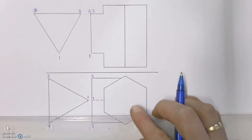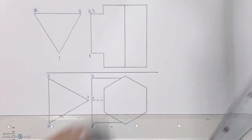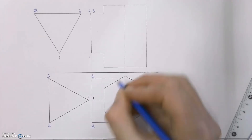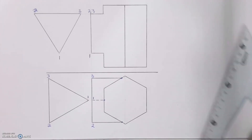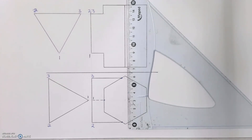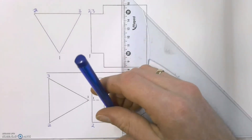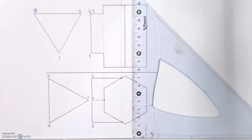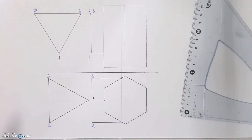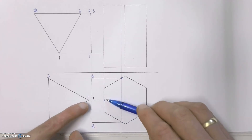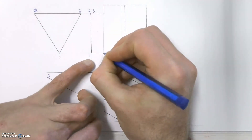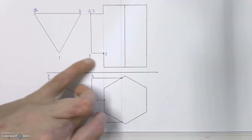We always start with the termination points — these are the points where my secondary pipe hits into my main pipe. I can mark those two points there, and then there's one more where another piece of the secondary pipe hits into the main pipe. I'm going to take each of those termination points and project them into the front view — project that line up into the front view, and that one into the front view.